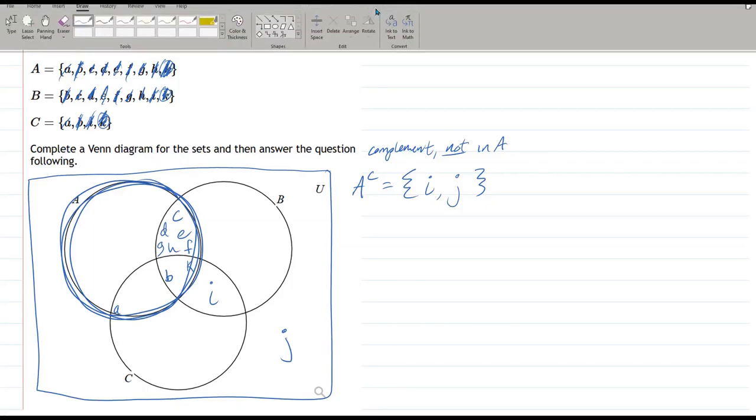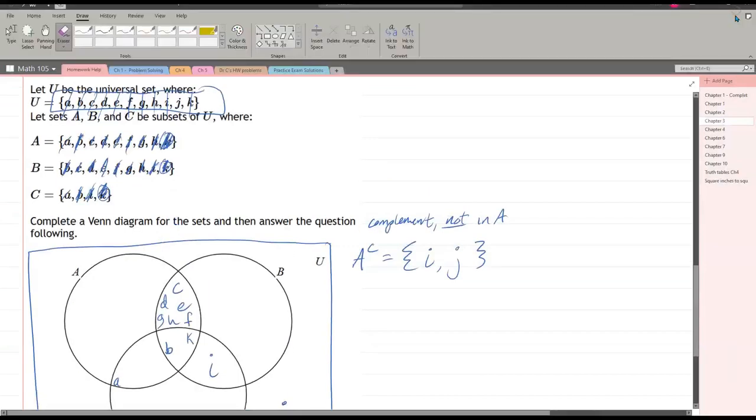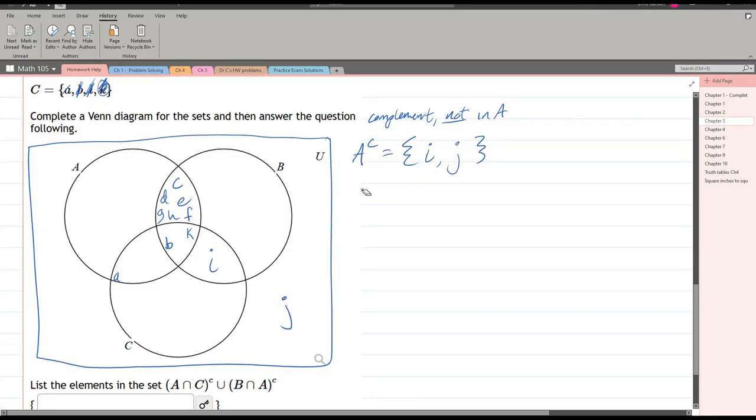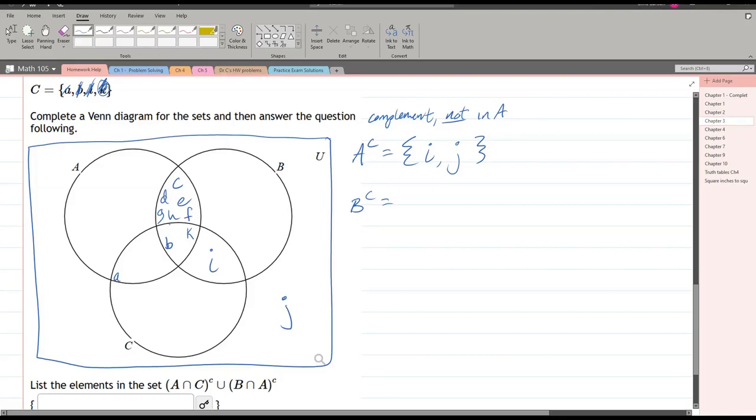Now I definitely need an eraser. There we go. All right. So that's not in A. We could do something similar, not in B, which would be B complement. So a lot of stuff is in B. What's not in B, it looks like A and J are not inside the B circle.